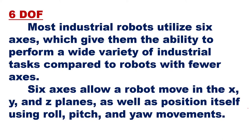There are six degrees of freedom related to robots. Most industrial robots utilize six axes, which give them the ability to perform a wide variety of industrial tasks compared to robots with fewer axes. A robot with six axes will have a much wider variety of industrial tasks it can perform.